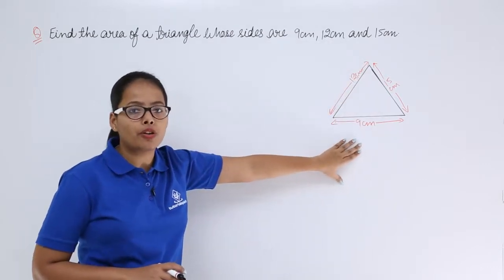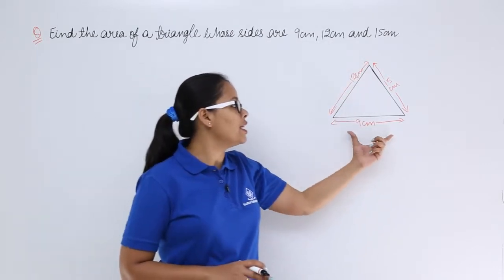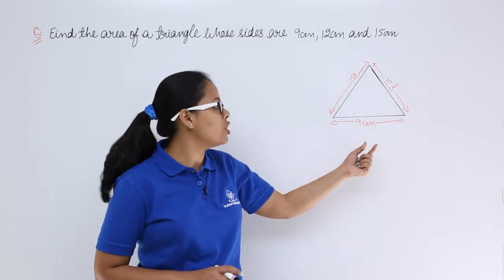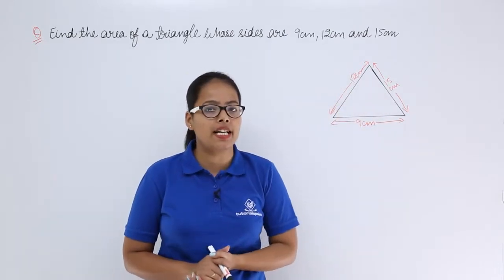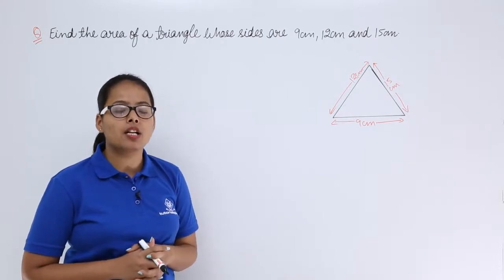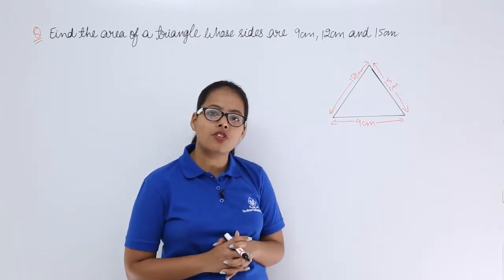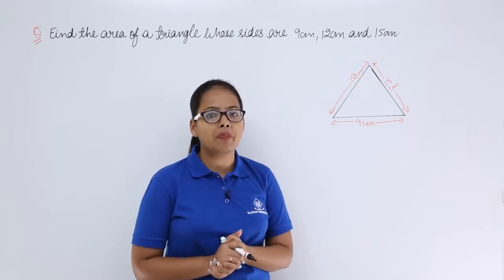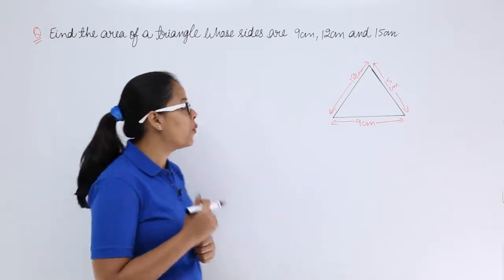You can see this figure on your right hand side where you can see the length of all these three sides which is 9 cm, 12 cm and 15 cm. As you need to find the area of this triangle, how are you going to find it? You are very much familiar with Heron's formula, what is that?